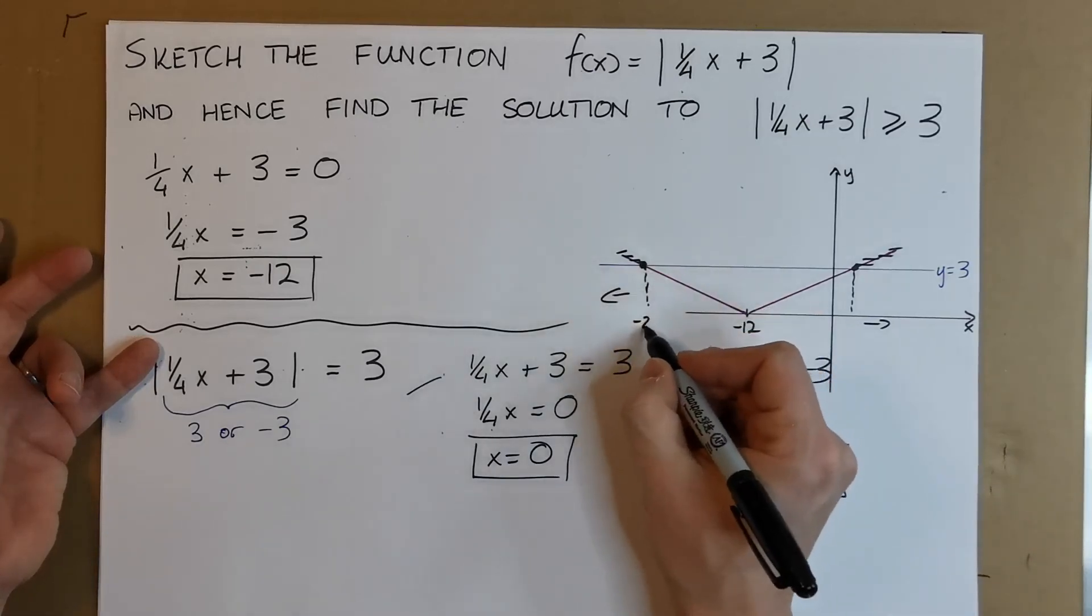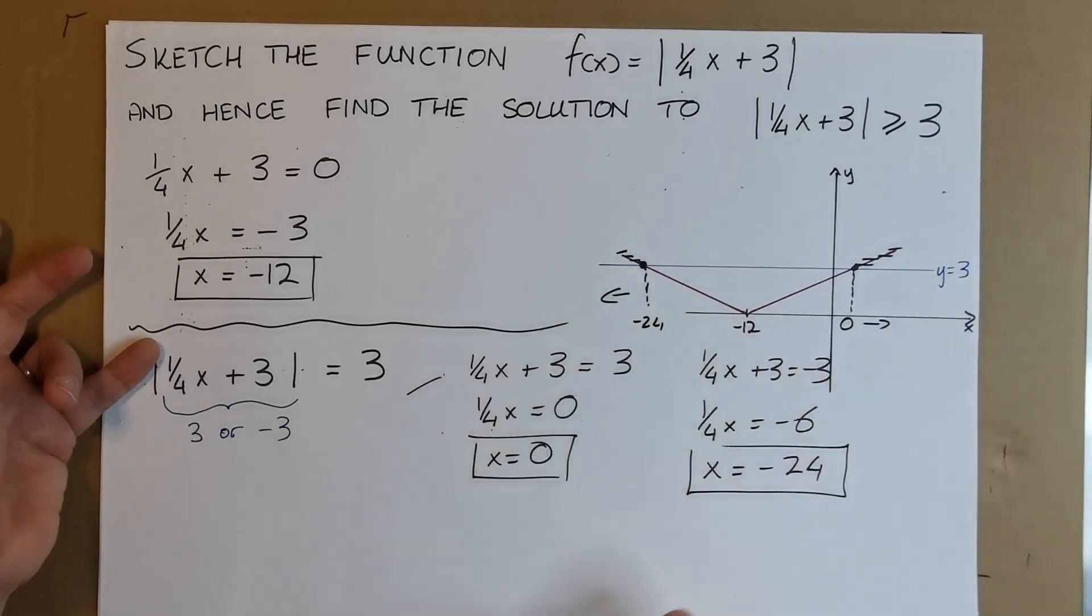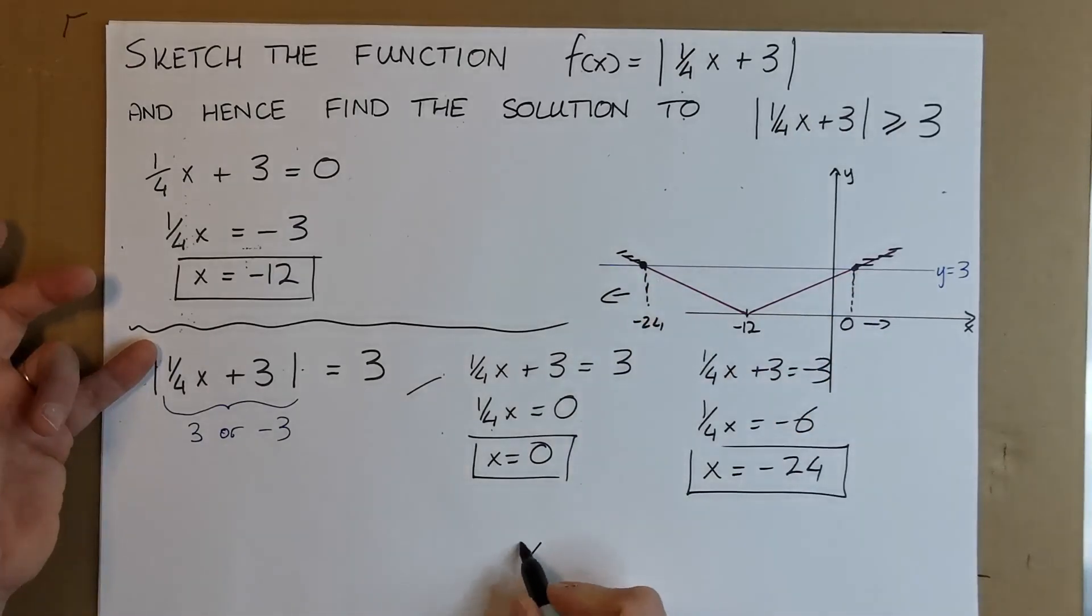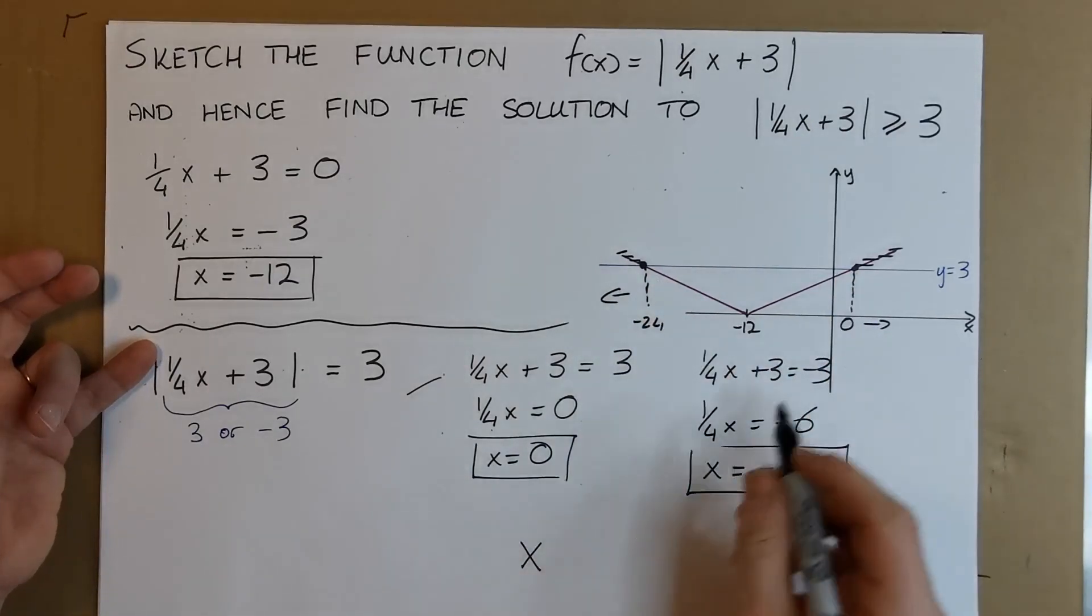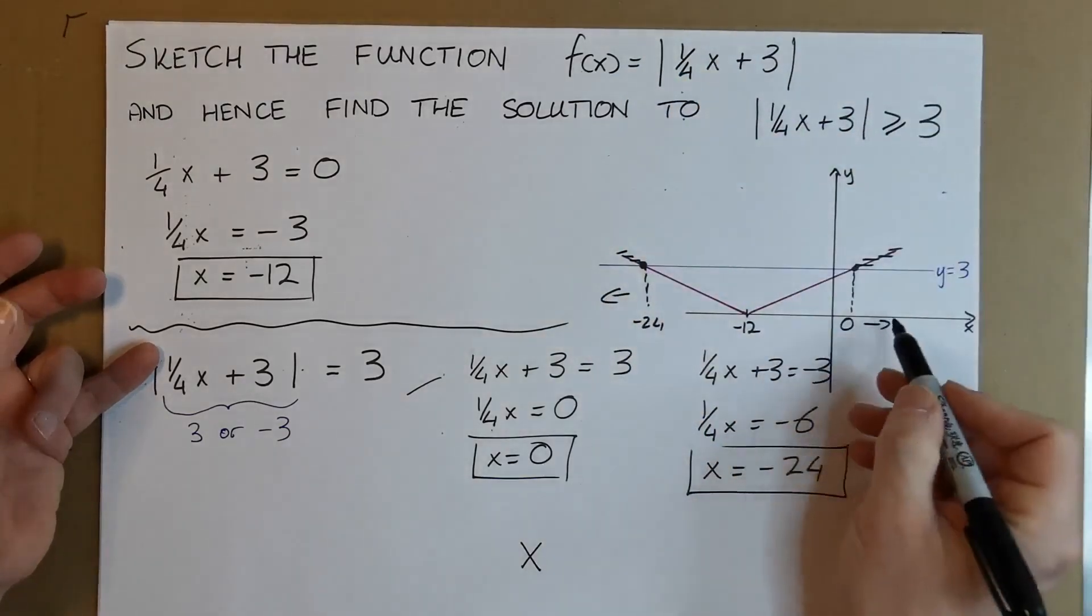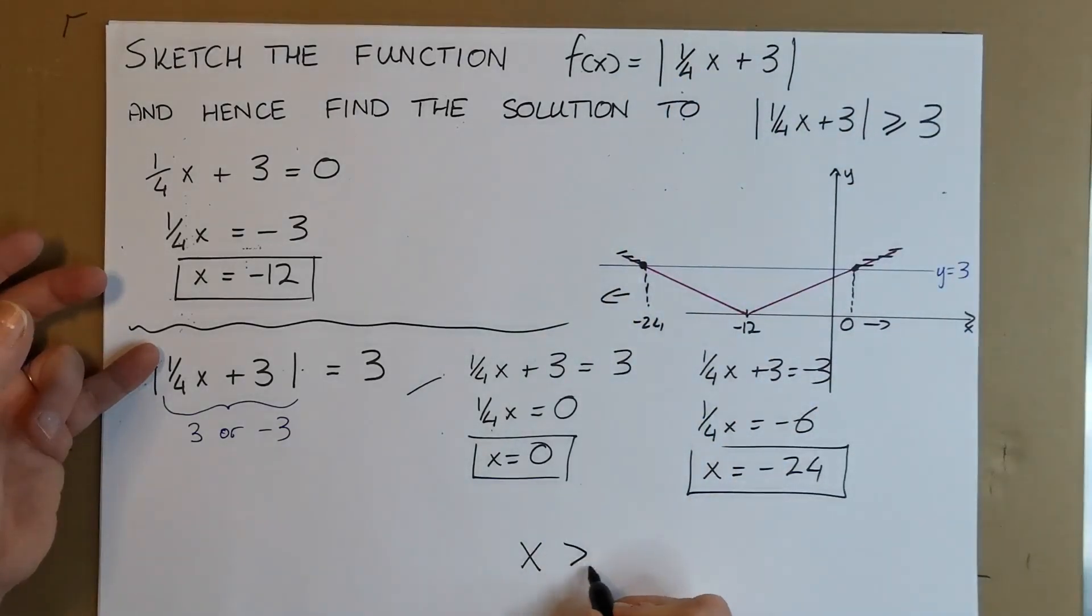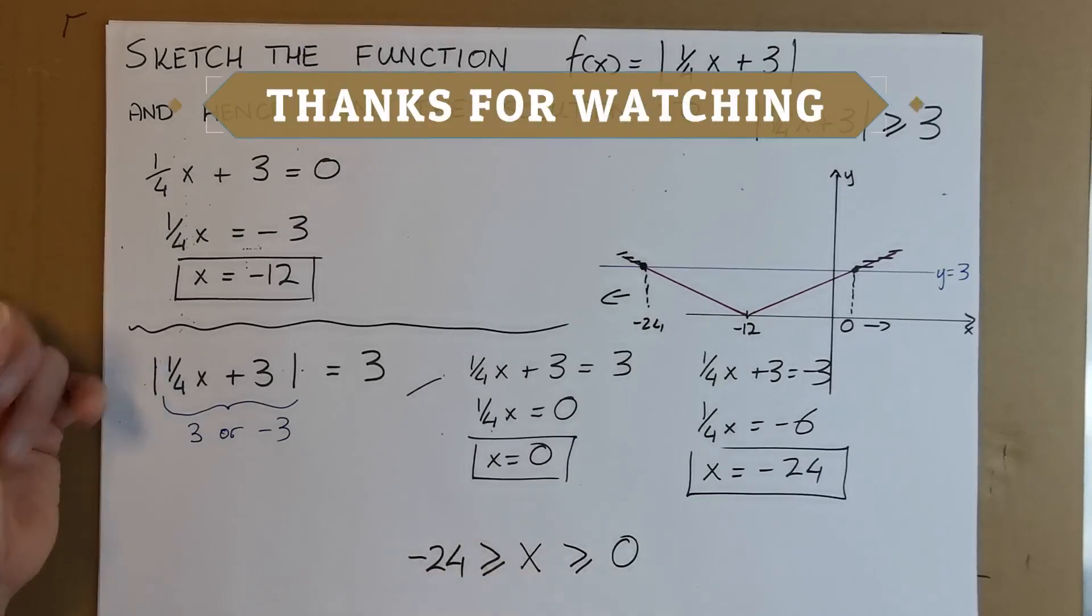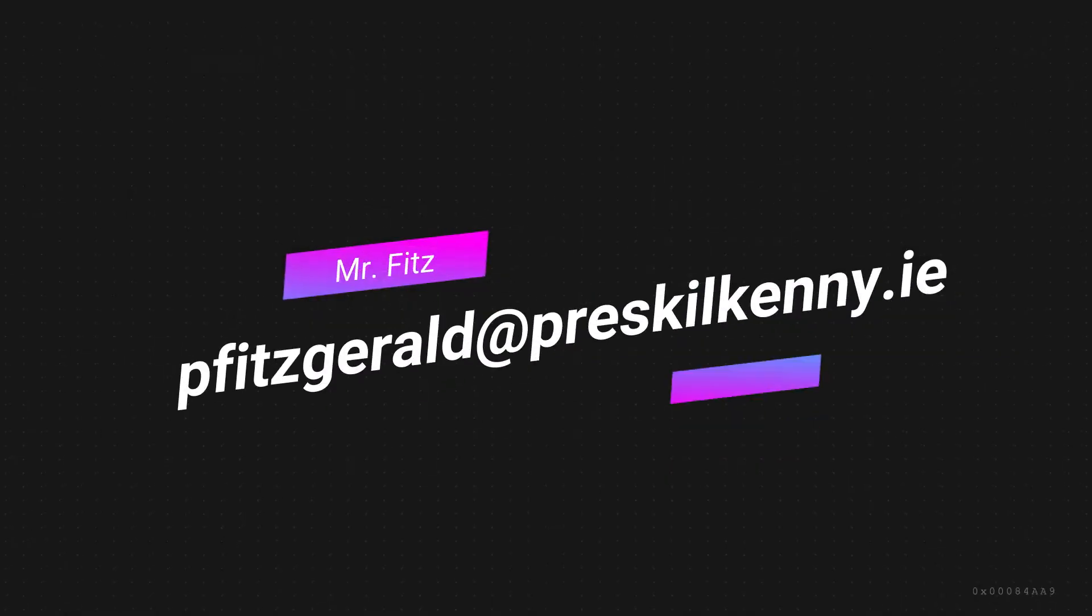At x = 0 and x = -24, these are the two points of intersection. So our inequality answer says that this graph is above 3 when x ≥ 0 or x ≤ -24. That's it.